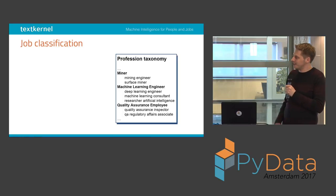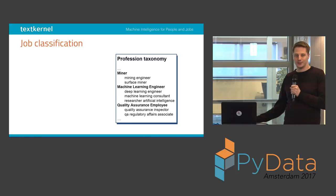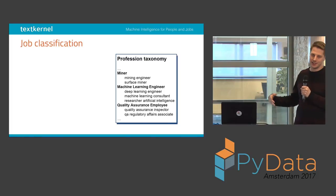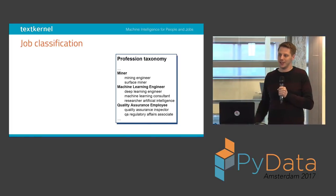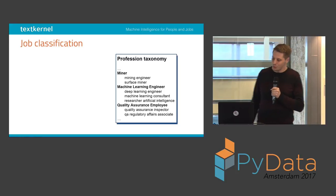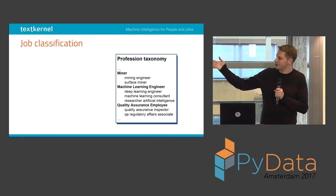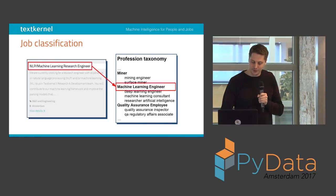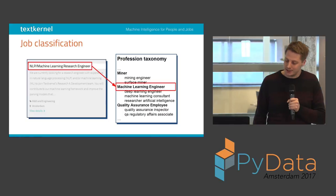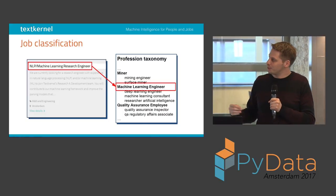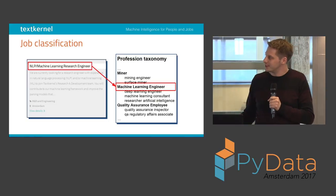Part of what we have is this profession taxonomy, which is an ontology about the different types of professions that exist and which of those are actually the same job. For example, a machine learning engineer and a deep learning engineer and a machine learning consultant are all the same profession according to our ontology. This is a modeling choice — how do you divide up the job market. Given this taxonomy, we have the problem of how do we map these strings that we extract, these vacancy titles, to those groups, those clusters in the taxonomy.